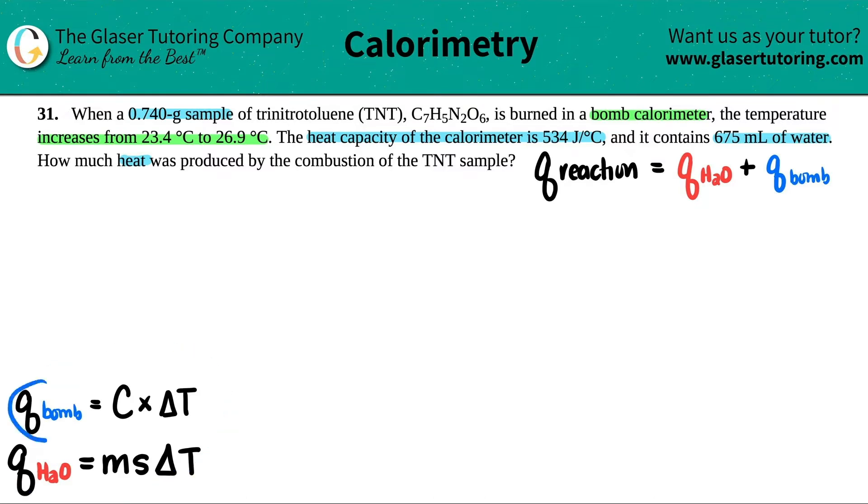We're going to find the heat from the bomb calorimeter by doing C times delta T. That's the formula you guys got to know. And then we've been using this one throughout this chapter, MS delta T. So I guess the first thing we'll do is the one that we know, we've been doing all along. Well, let's find the heat of the water. So MS delta T.